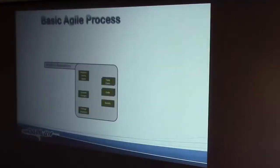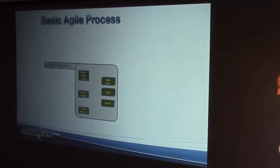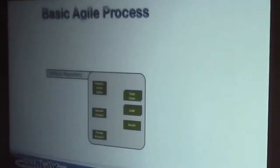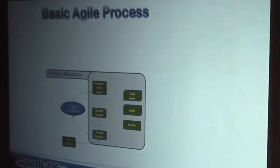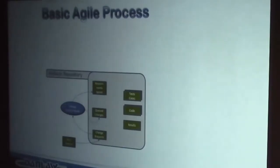We put all our artefacts in a repository, and we want to manage those things in some system. We saw that requirements can have different versions, and not only do we need to manage different versions of source code and test cases, we need different versions of requirements also. We get new requirements in, they queue into our system, and a change control board reviews them and decides whether they'll be part of the next sprint. Some things get queued into a sprint; others get queued for a later time.